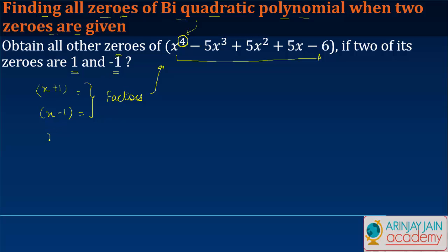Why? Because we are told that x equals 1 and x equals -1, assuming these are the zeros.